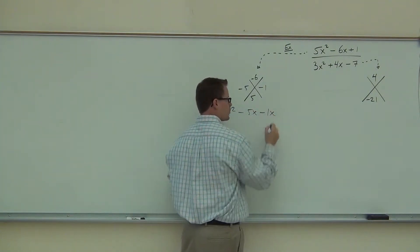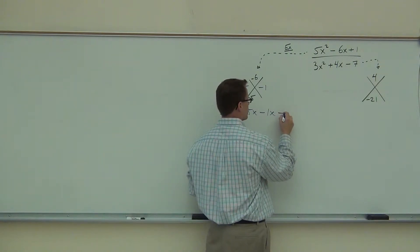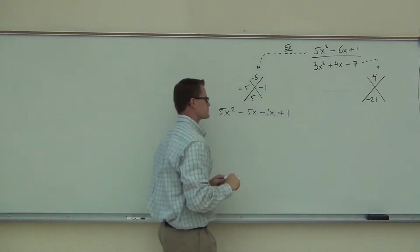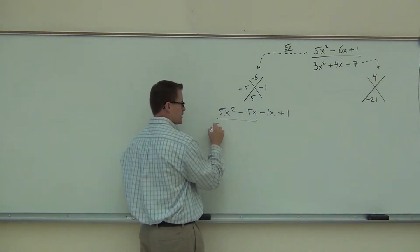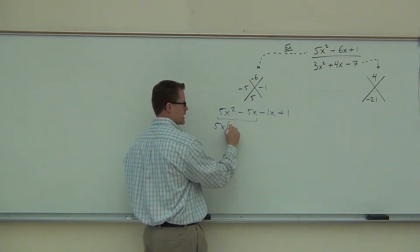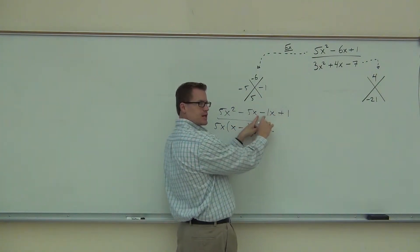5x minus 1x, I'm going to put the 1 there just to make sure we see that, plus 1. And we're going to factor by grouping. So factor by grouping, we have 5x we're pulling out of that. We're factoring that out, we get x minus 1. Over here,